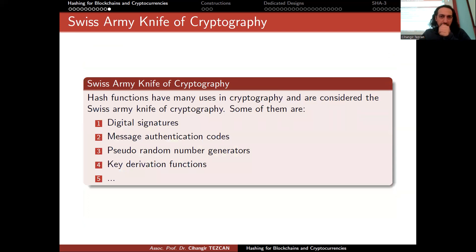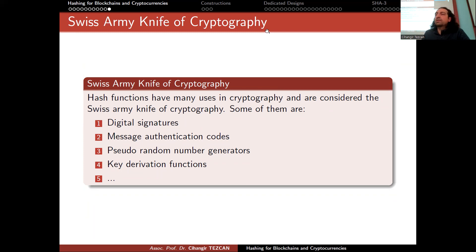We call hash functions the Swiss army knife of cryptography because we use them in many places: digital signatures, message authentication codes, pseudo-random number generators, key derivation functions, and so on. This is why they are very useful and extensively used in blockchains and cryptocurrencies.